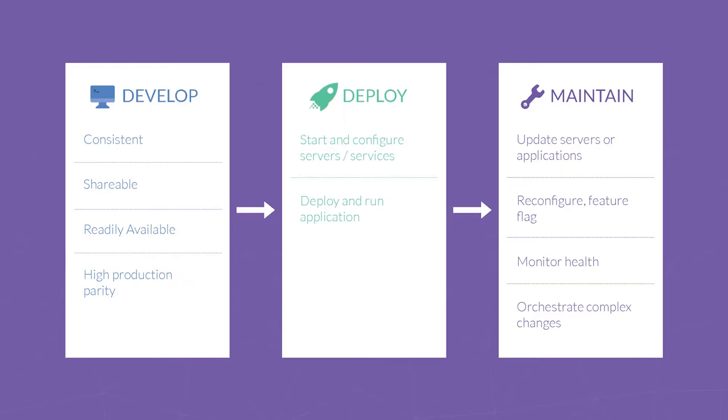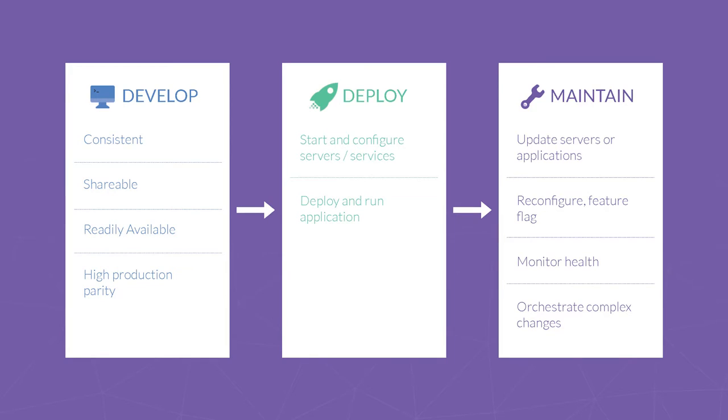If you break down the application lifecycle, you have develop, deploy, and maintain. The initial development happens usually on your personal laptop — your personal workstation. What's important about that environment is that it's consistent and shareable among your developers, readily available. I don't want to wait three days for my development instance to provision just so I can write one line of code. It should be as close to production parity as possible. If we have a production infrastructure with 50 microservices, obviously we're not going to run all 50 locally, but we should be running the same version of Redis, MySQL, Postgres as in production — so the cost of fixing a bug in development is drastically reduced compared to after it hits production.